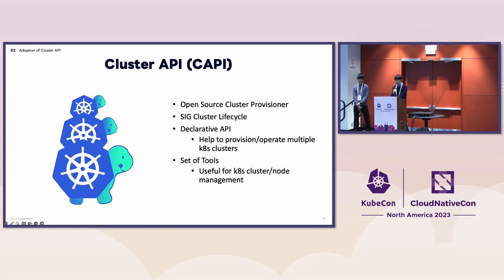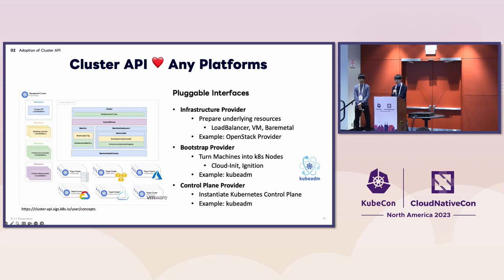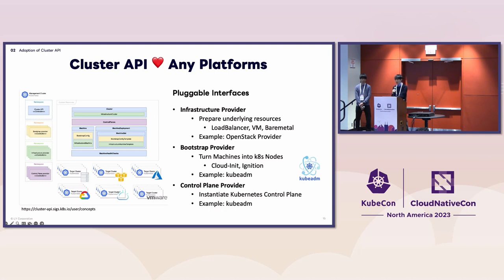What is Cluster API? Cluster API is a project hosted by the Kubernetes community, focusing on simplifying provisioning, upgrading, and operating multiple Kubernetes clusters. It has a declarative API and a set of controllers that are useful for cluster and node management. The key point is that Cluster API has pluggable interfaces called providers. There are three types: the infrastructure provider, which prepares actual resources like load balancers or VMs; the bootstrap provider, which turns machines into Kubernetes nodes; and the control plane provider, which manages Kubernetes control planes. We can use community-provided providers or implement our own.